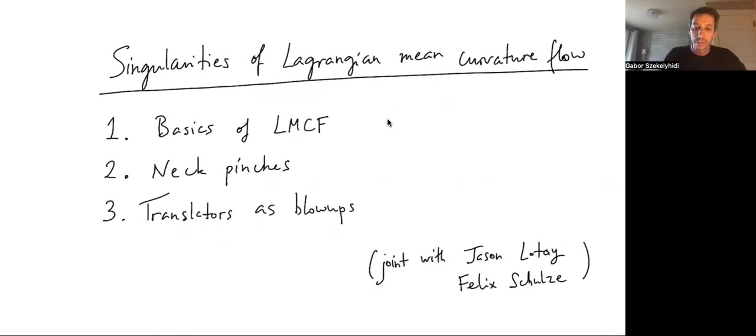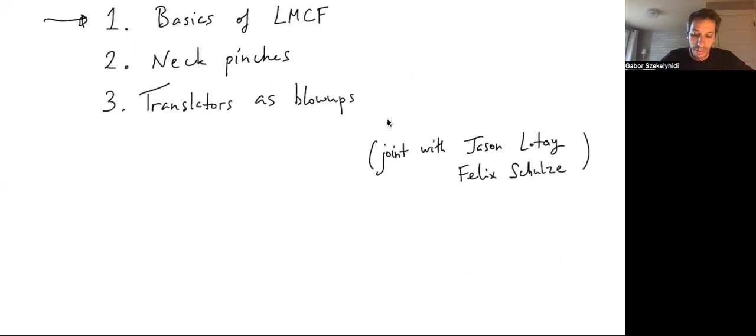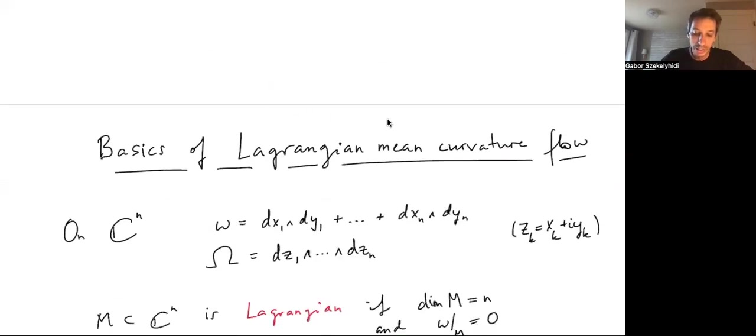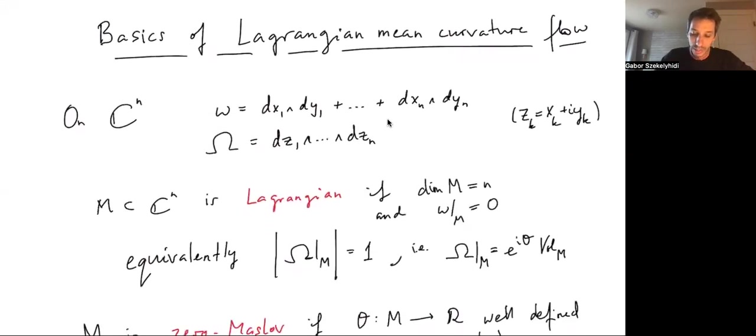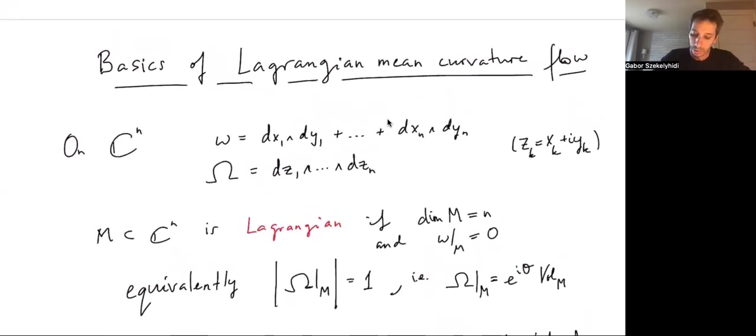This talk is going to be the first of a series of three talks that I'm giving on singularities of the Lagrangian mean curvature flow. This is talk number one. Everything that I'm going to discuss is joint work with Jason Lotte and Felix Schulze. In this talk, I'm going to give some minimal background that we need to know about the Lagrangian mean curvature flow to understand this topic.